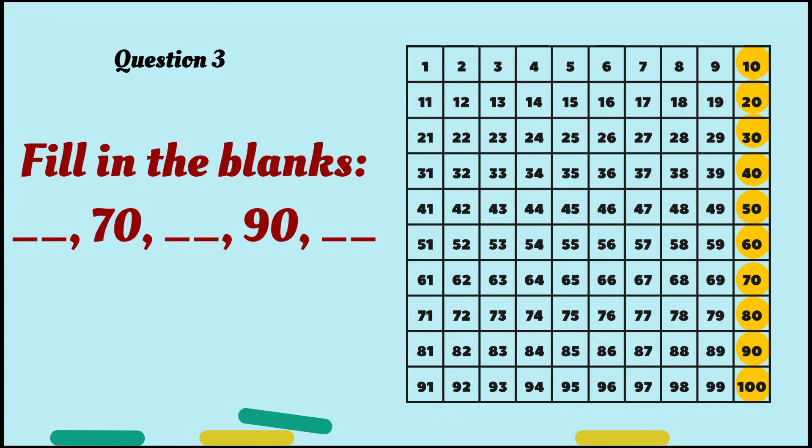Yes! Those blanks are 60, 80, and 100. Awesome job, guys! As you can see in the grid, 60, then it's 70, then it's 80, then it's 90, and then, da-da-da! 100. So, those blanks are 60, 80, and 100.